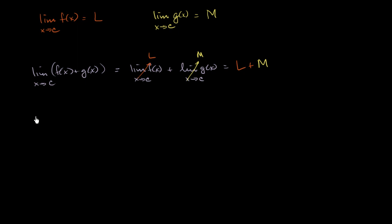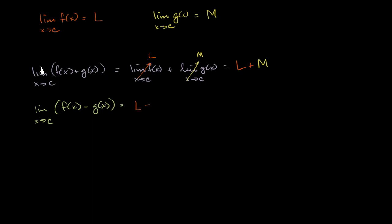We could come up with a very similar one with differences. The limit as x approaches c of f of x minus g of x is just going to be L minus M — it's just the limit of f of x as x approaches c minus the limit of g of x as x approaches c.